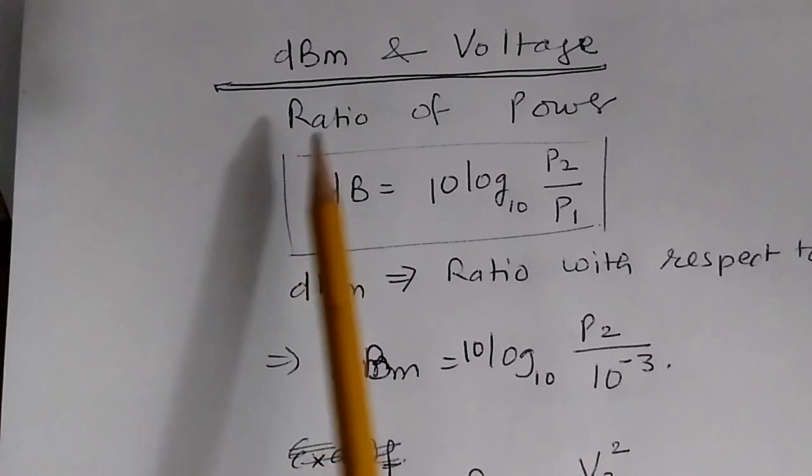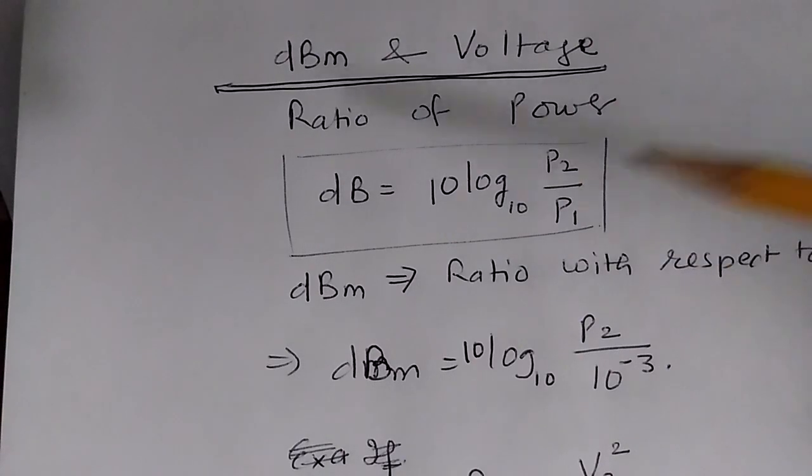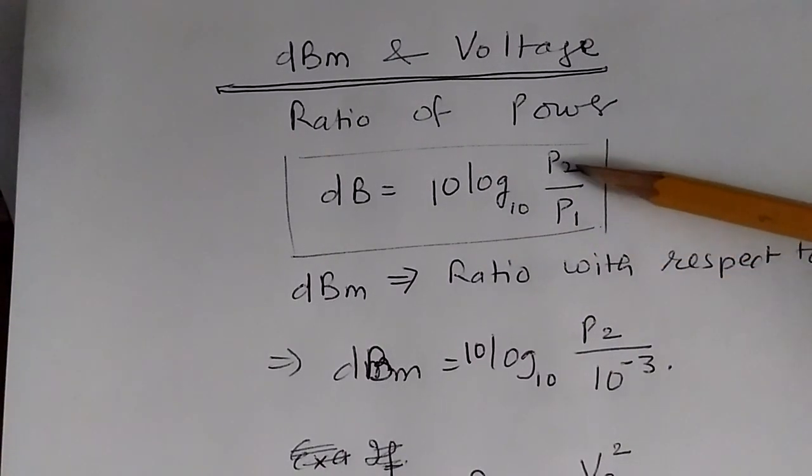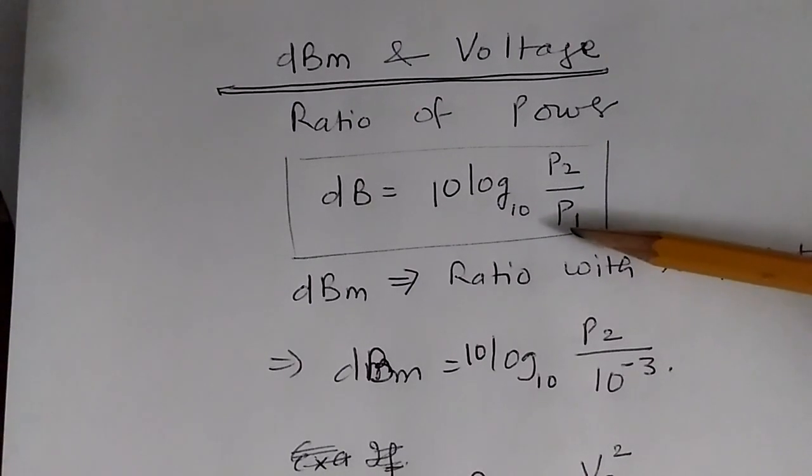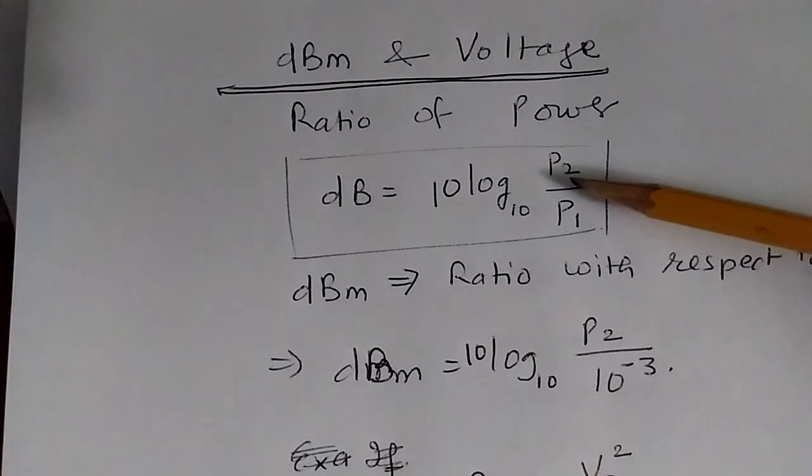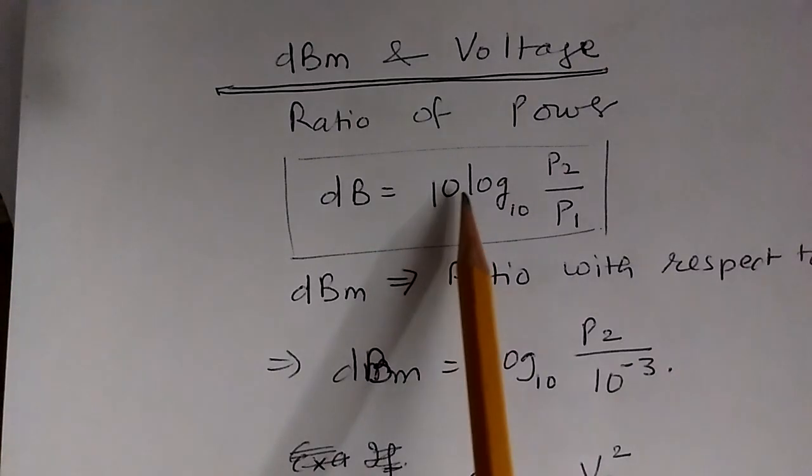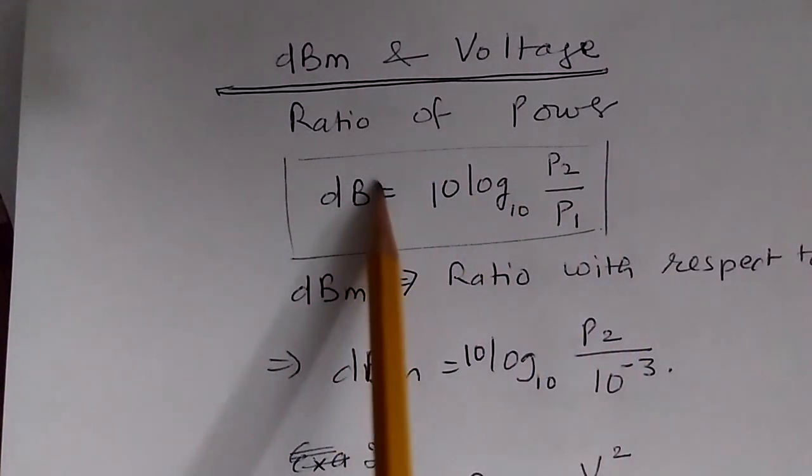Before that, we want to know the ratio of power. If we have powers P2 and P1, one way to express their ratio is to divide P2 by P1. Another way is to take the logarithm to base 10 and multiply by 10. You get a quantity we call dB.